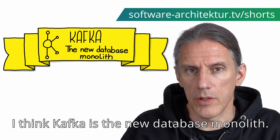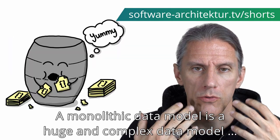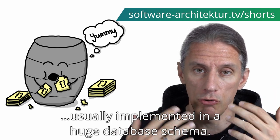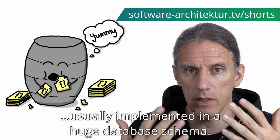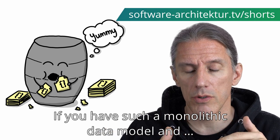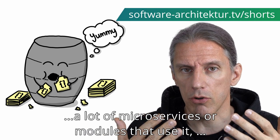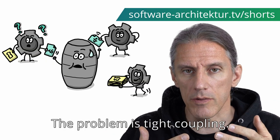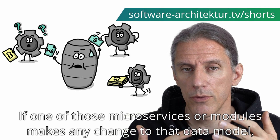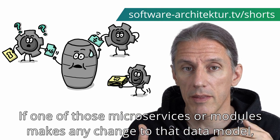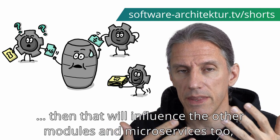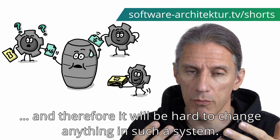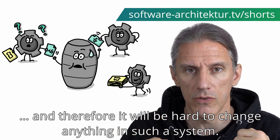I think Kafka is the new database monolith. A monolithic data model is a huge and complex data model usually implemented in a huge database schema. If you have such a monolithic data model and a lot of microservices or modules that use it, then you do have a problem. And the problem is tight coupling. If one of those microservices or modules makes any change to that data model, then that will influence the other modules and microservices too, and therefore it will be hard to change anything in such a system.